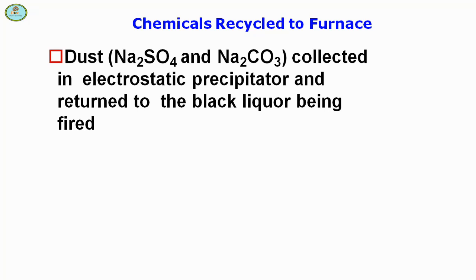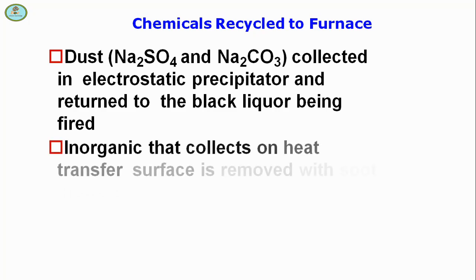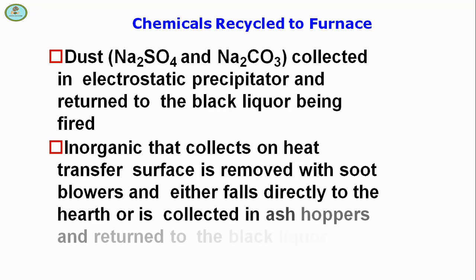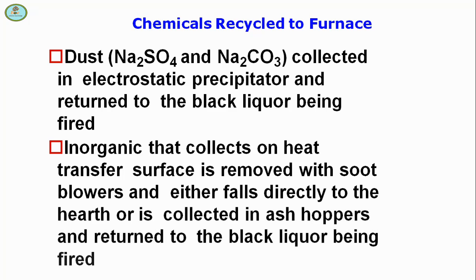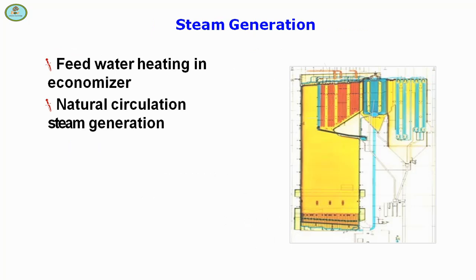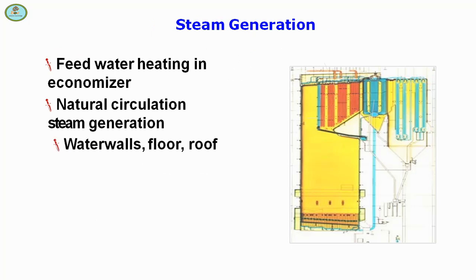Recovered dust is returned to the black liquor being fired. Inorganic material that collects on heat transfer surfaces is removed with soot blowers and either falls directly to the hearth or is collected in ash hoppers and returned to the black liquor being fired. Feed water heating occurs in the economizer, with natural circulation steam generation through water walls, floor, roof, and screen.